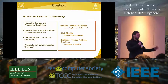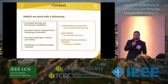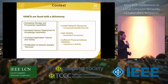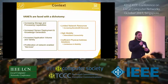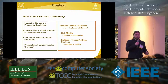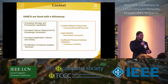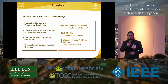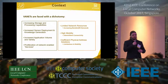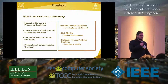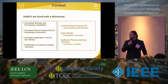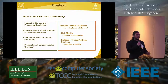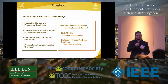Networks have significant limitations. We have a dichotomy: increasing storage and processing capabilities in vehicles, increased sensor deployment — image sensors, speed sensors, proximity sensors — generating knowledge that can be shared within a local vehicle network. Applications are increasing in variety, from safety and passenger comfort systems to entertainment. This means an increase of network services, yet we have very limited network resources.